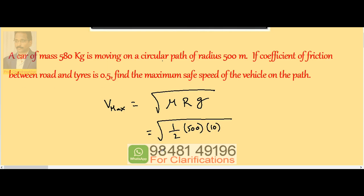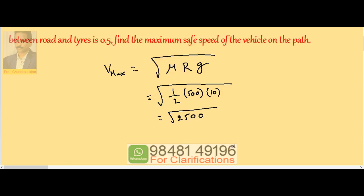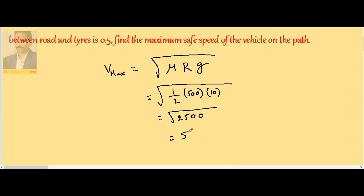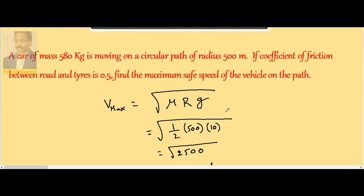Simplifying: 0.5 multiplied by 500 multiplied by 10 gives 2500, because 250 into 10 is 2500, and the square root of 2500 is 50. Therefore, the maximum safe speed of the vehicle on the curved path is 50 meters per second.